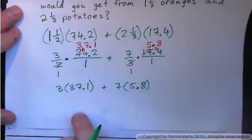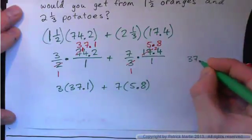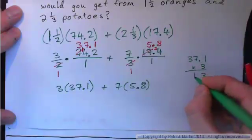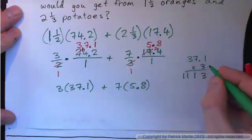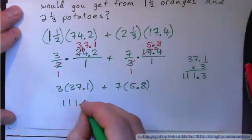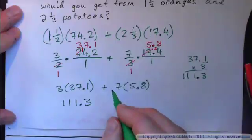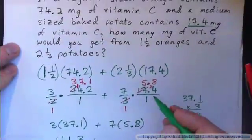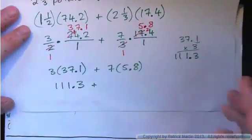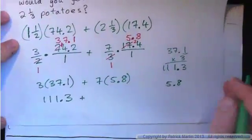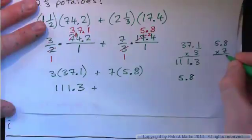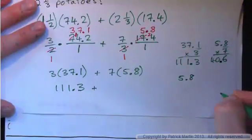You just multiply these out and then add them together and you're done. Thirty-seven point one times three: three times one is three, three sevens is twenty-one carry the two, three is nine and two is eleven. One decimal space, so we get one hundred eleven point three milligrams of vitamin C from the oranges. Then five point eight times seven: seven eights is fifty-six carry the five, seven fives is thirty-five and five is forty. One decimal place, so forty point six.